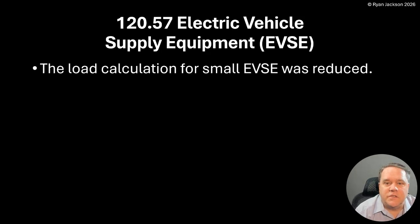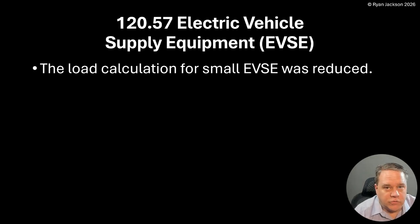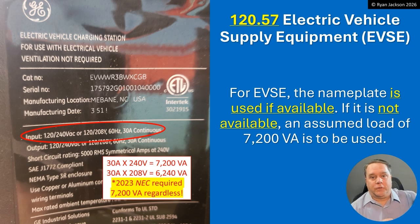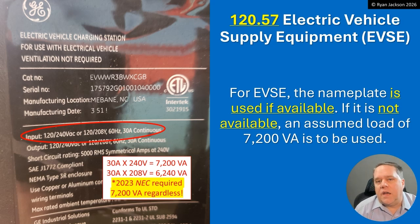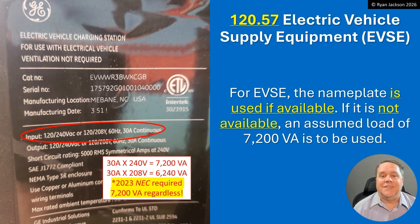120.57 covers electric vehicle supply equipment. The load calculation for small EVSE was reduced. This was added in the 2023 code — fortunately — because before there was nothing. If there's no guidance on load calculations, here's an interesting way to look at it: all Article 120 does is allow you to use less than the nameplate. That's the whole concept of Article 120.